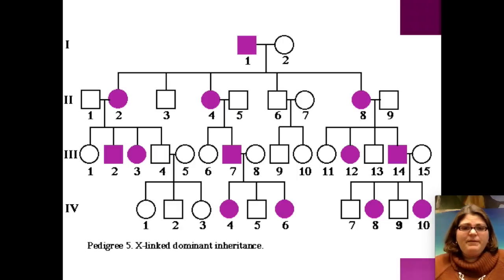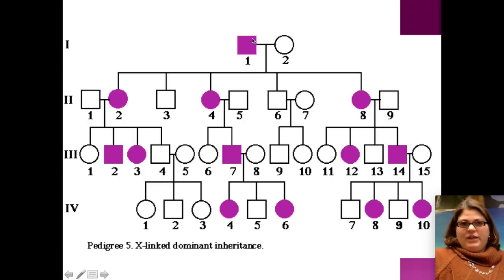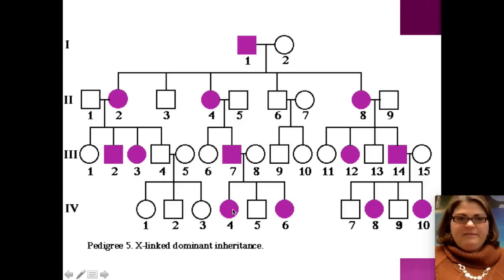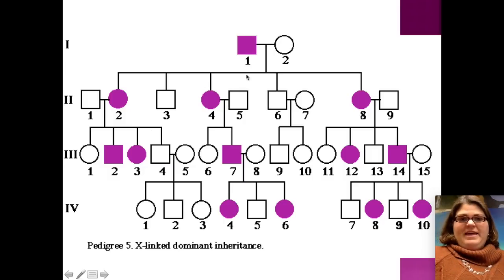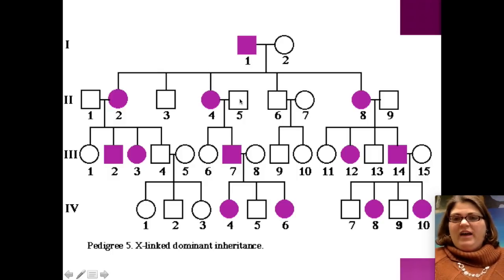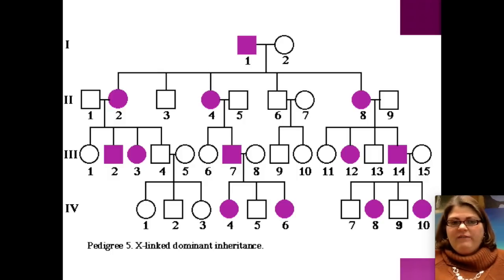So if we look at this pedigree, we have four generations — you could think of this like great-grandma and great-grandpa, their kids, their kids' kids, and then their great-grandkids. If I wanted to refer to a specific person, say this person here, I would say generation two, fifth person in — so Roman numeral two, five, or two-dash-five.